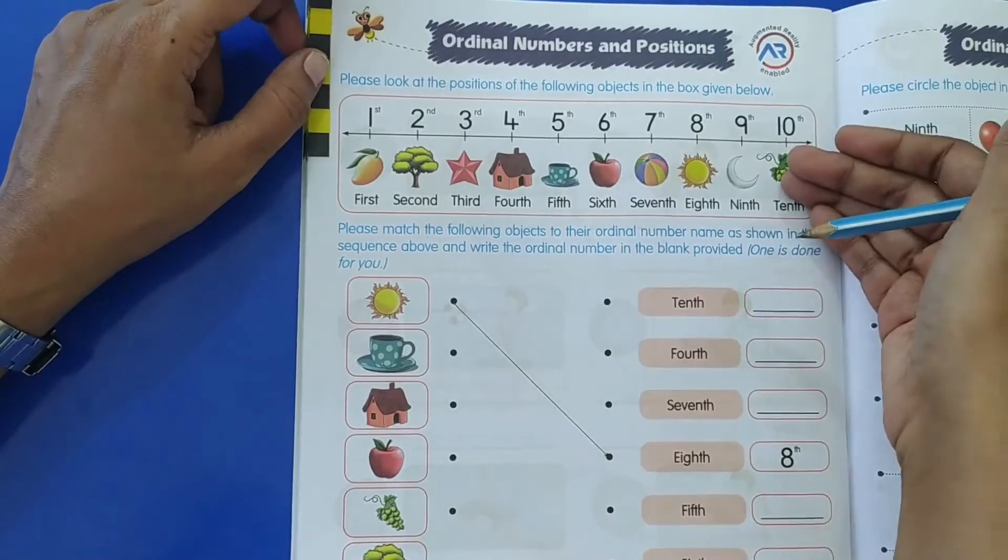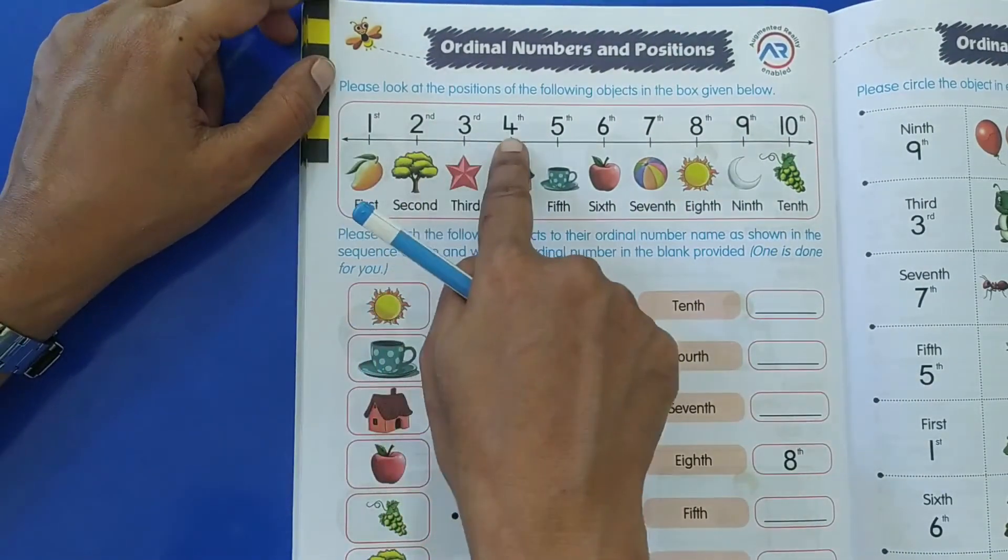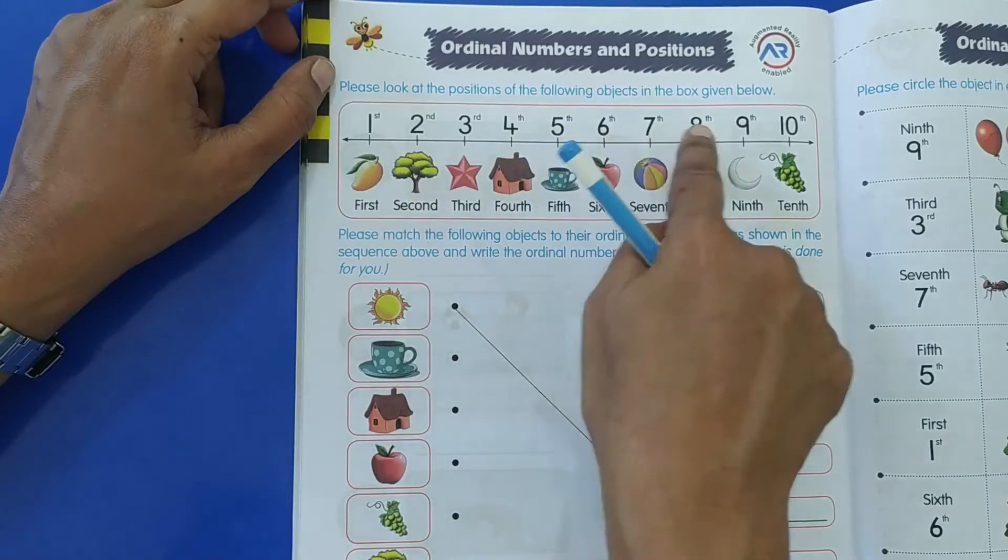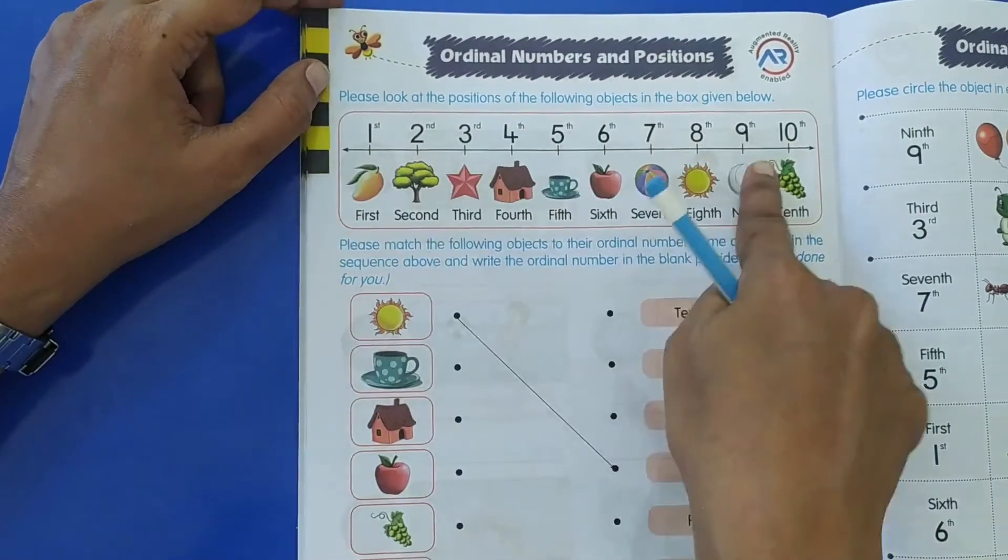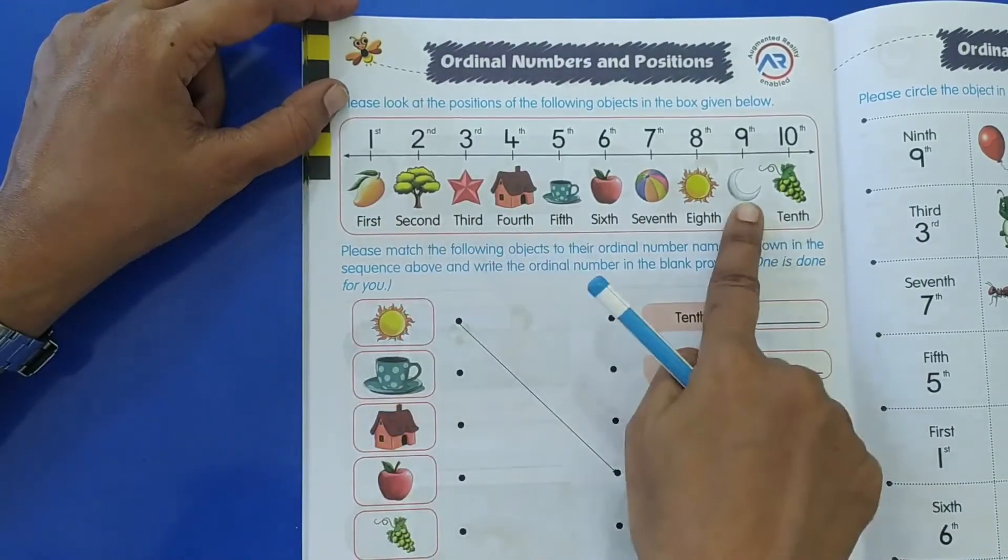Now what is ordinal numbers? You know these numbers: 1, 2, 3, 4, 5, 6, 7, 8, 9, 10. Now, if here down you have some objects like a mango, a tree, a star...